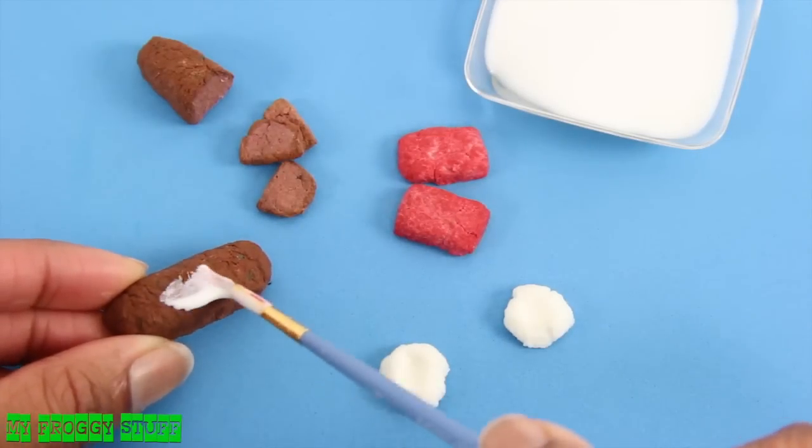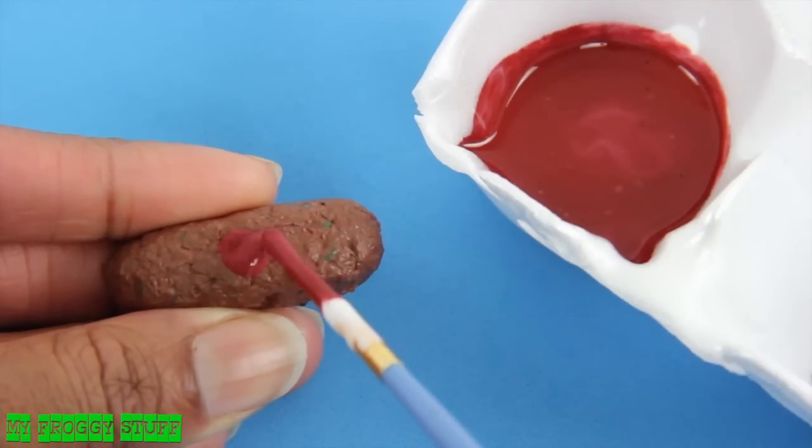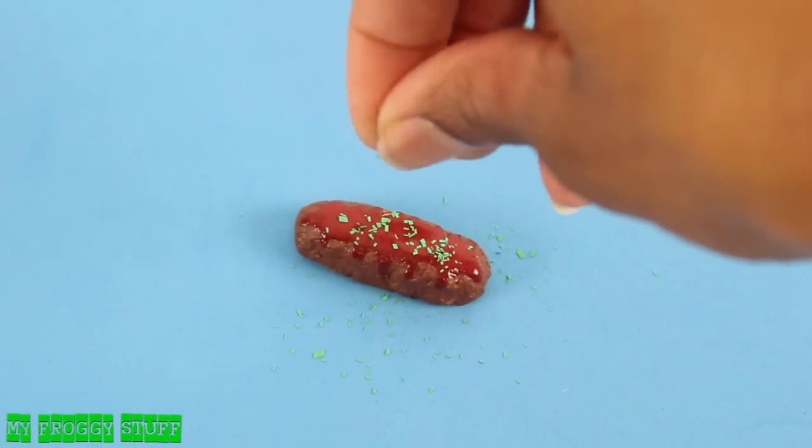Once dry, brush on a thin layer of glue to seal it. Make a sauce using paint and glue, and sprinkle on some cut paper for seasonings.